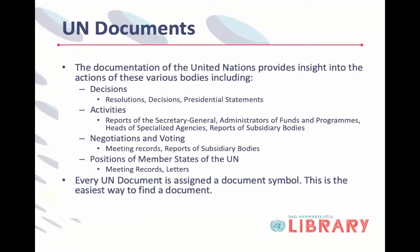The UN is very large and very complex. Its documentation provides insight into the actions of all these bodies. Decisions are found in documents like resolutions or presidential statements. Activities are included in reports of the Secretary General, reports of administrators of funds and programs, heads of specialized agencies, and subsidiary body reports. Negotiations between member states are captured in meeting records and reports of subsidiary bodies, including voting information. Member state positions appear in meeting records reflecting speeches given, and also in letters circulated through the UN.